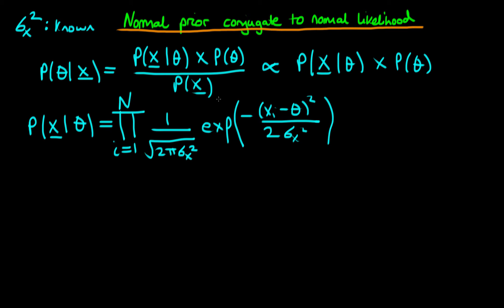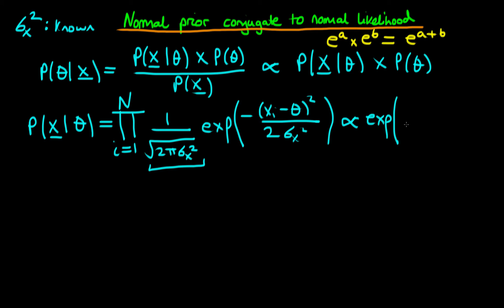What we're going to do is take the fact that we've got a product of exponents and use the rule that e^a times e^b equals e^(a+b). Where we've got n things multiplied together, we can forget about the constant prefactor because it doesn't contain any theta dependence. Hence the likelihood is proportional to the exponent of minus the sum from i equals 1 to n of (x_i minus theta) squared divided by 2 sigma_x squared.